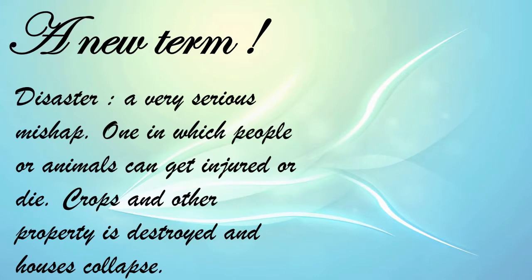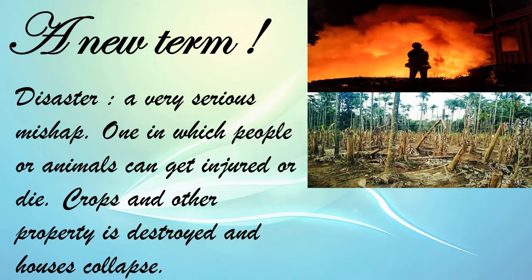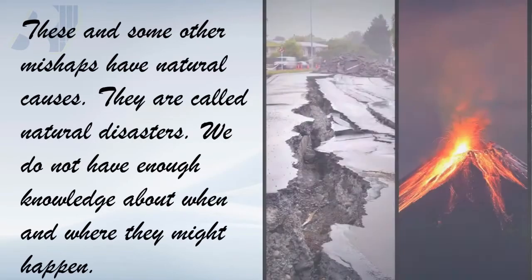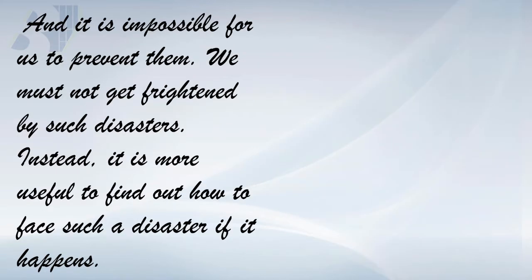A disaster is a very serious mishap — an unfortunate accident in which people or animals can get injured or die, crops and other property are destroyed, and houses collapse. These and some other mishaps have natural causes and are called natural disasters. We do not have knowledge about when and where they might happen. Anytime, any disaster can happen, and it is impossible for us to prevent them.